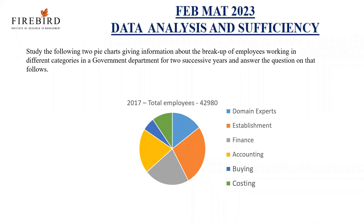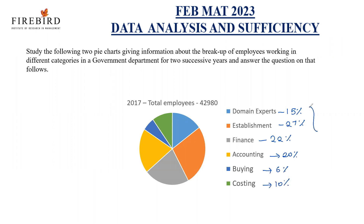This question is based on the Feb. MAT 2023 question paper. Study the following two pie charts giving information about the breakup of employees working in different categories in a government department for two successive years and answer the questions. In 2017, the total employees with the company are 42,980, working in different tasks: domain experts 15%, establishment 27%, finance 22%, accounting 20%, buying 6%, and costing 10%.